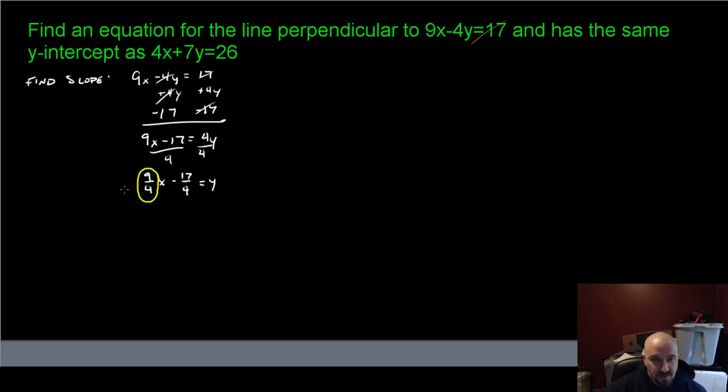Now I have a slope. This is my slope, 9/4. So my perpendicular slope is the opposite. This was positive, I change it to a negative. I flip the fraction. So it would be -4/9.